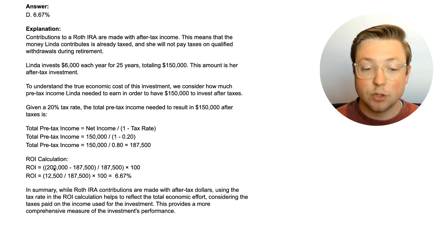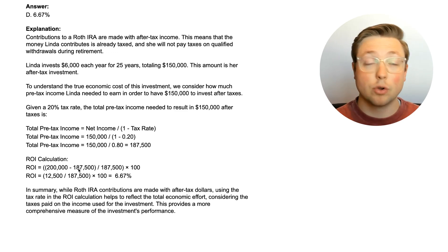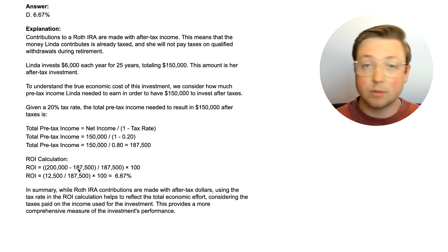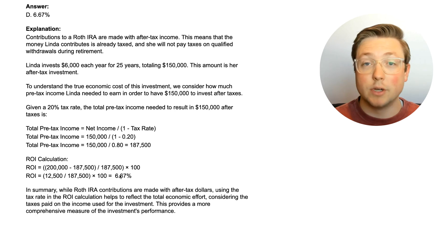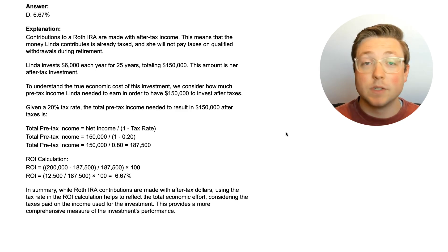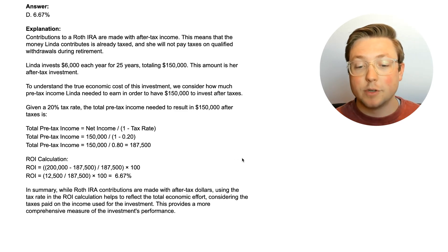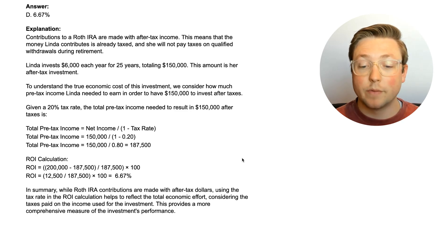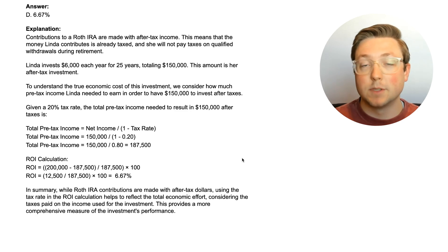So you take the current balance of $200,000 — the projected balance — subtract the total pre-tax income of $187,500, divide by $187,500 again, and that gives you only 6.67% ROI. Not a very good return on investment. It makes sense: she invested $150,000 and is only getting $200,000 out in the end after 25 years of investing. In summary, while Roth IRA contributions are made with after-tax dollars, using the tax rate in the ROI calculation reflects the total economic effort, considering taxes paid on the income used for the investment. This provides a more comprehensive measure of performance.